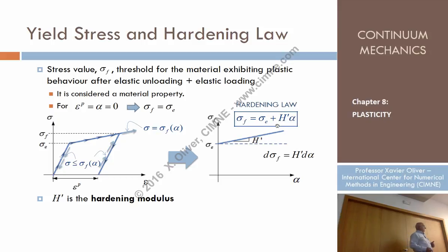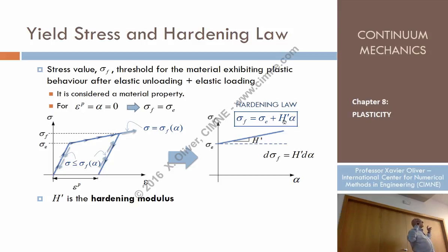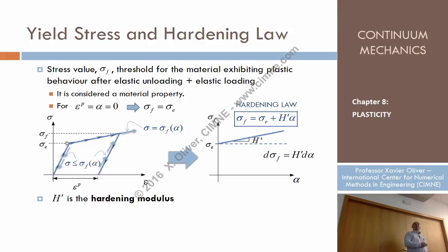H prime is called the hardening modulus. What happens if H prime is zero? The slope of the yield stress curve is horizontal — sigma_f is always sigma_e. That is called perfect plasticity, which is a strong simplification you are familiar with. For perfect plasticity, H prime equals zero, meaning there is no hardening and the material can never overcome the elastic limit.